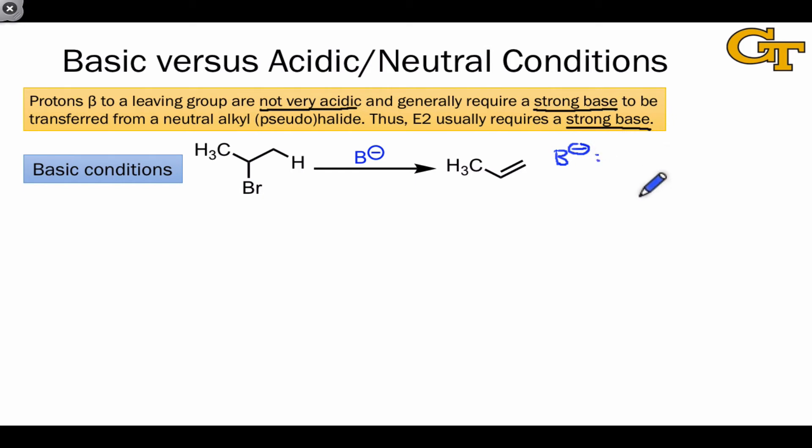These tend to be the anions of second-row atoms, especially nitrogen and oxygen. NR2- is often a great base, and OR- is often a great base.